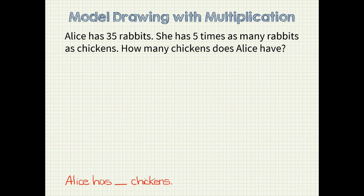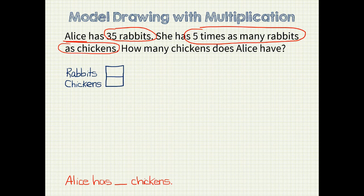Now I will identify the who and the what. I see that Alice has 35 rabbits and five times as many rabbits as chickens. Now I'm ready to draw my unit bars based on what I know and what I need to find out. I will first start with one equal size unit bar each for rabbits and chickens, and then adjust from there. Since Alice has five times as many rabbits as chickens, I will add four more unit bars to rabbits. Now I can write down that Alice has 35 rabbits, and I will write a question mark for chickens, since that is what we need to find out.